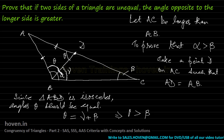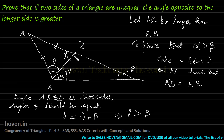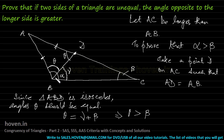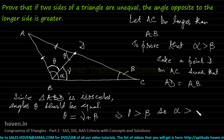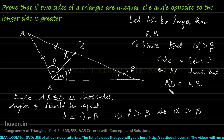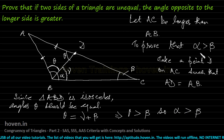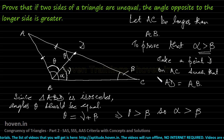Therefore, since theta is a part of alpha (formed by drawing the line BD), alpha will be even more than beta. So if AC is longer than AB, then alpha is greater than beta — now proved.